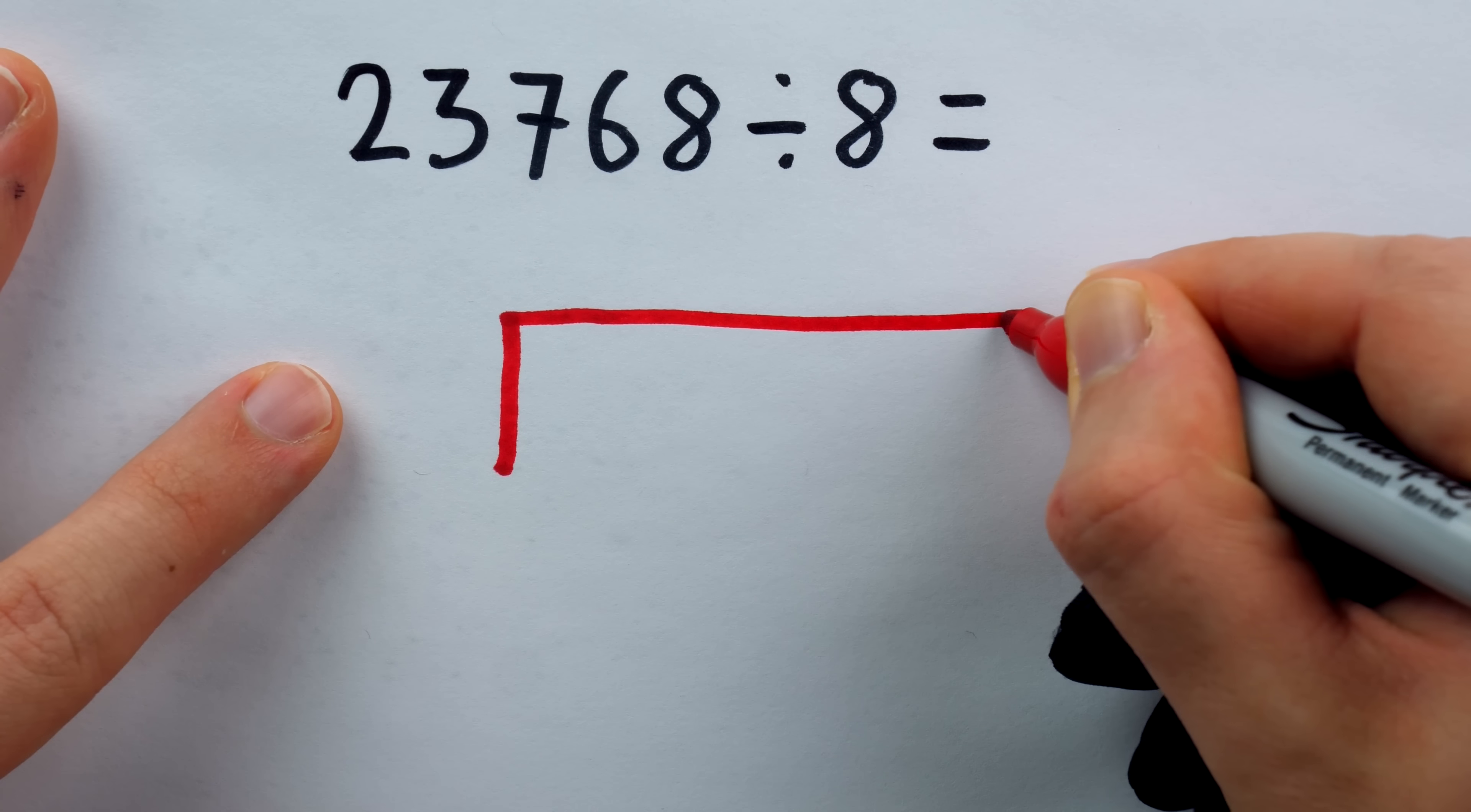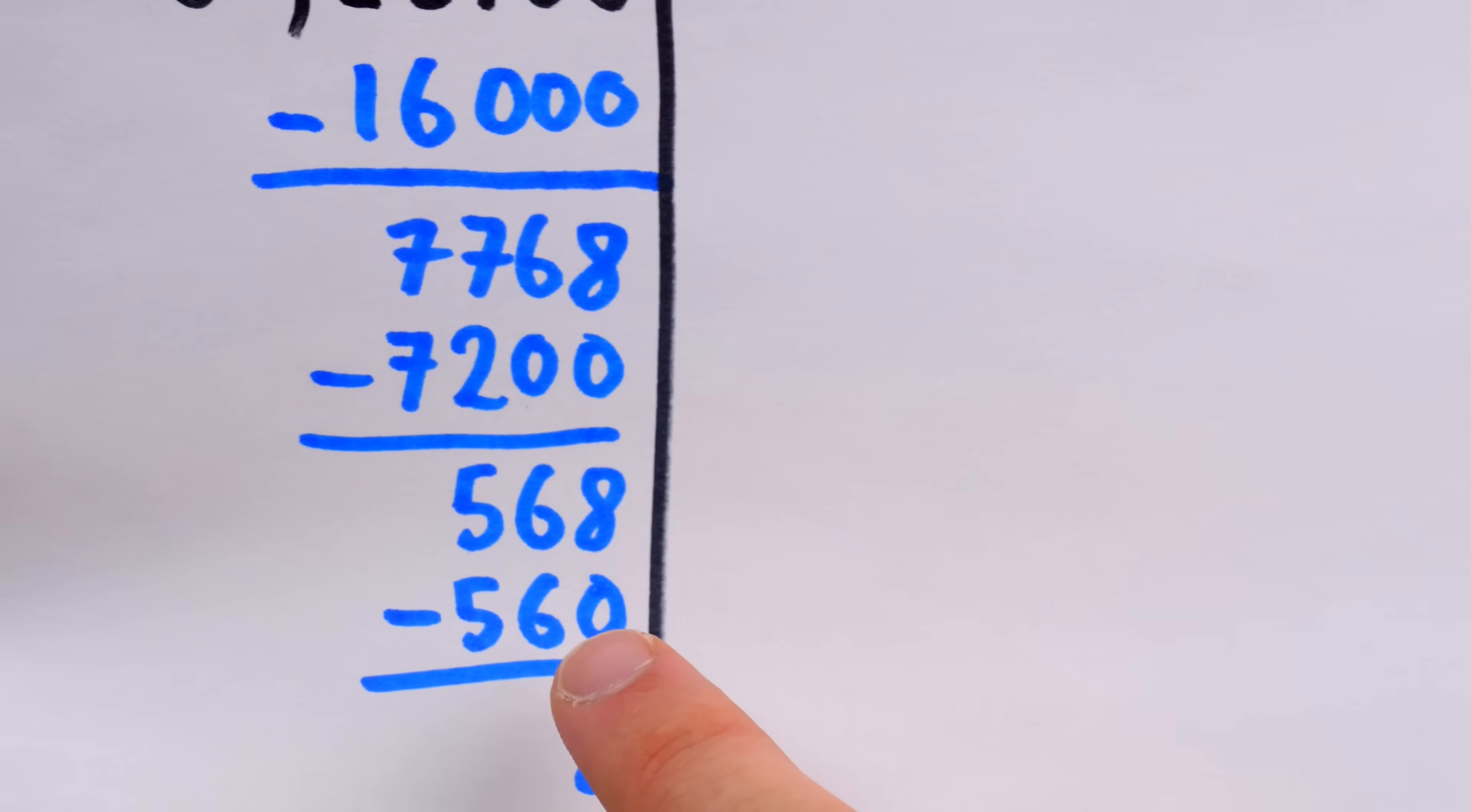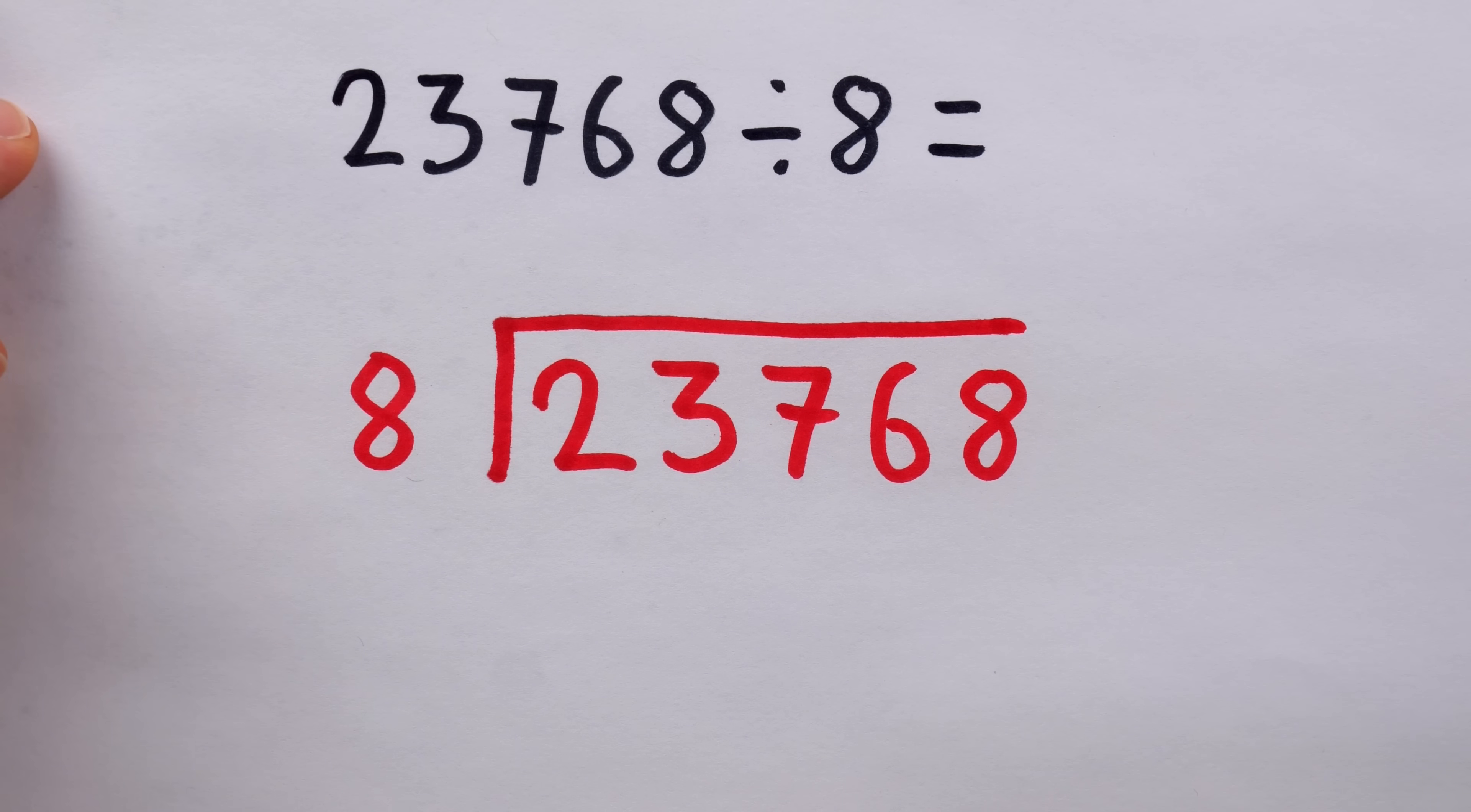We have this same sort of L shape that's going to help us with our information. We put 8 there, that's the divisor, and then the dividend, 23,768. The difference with short division is that we're not going to actually write out all of these numbers we're subtracting when we use the long division method. We're going to keep some of that stuff in our head, and with the short division method, we'll just be writing down remainders until we end up with our final answer.